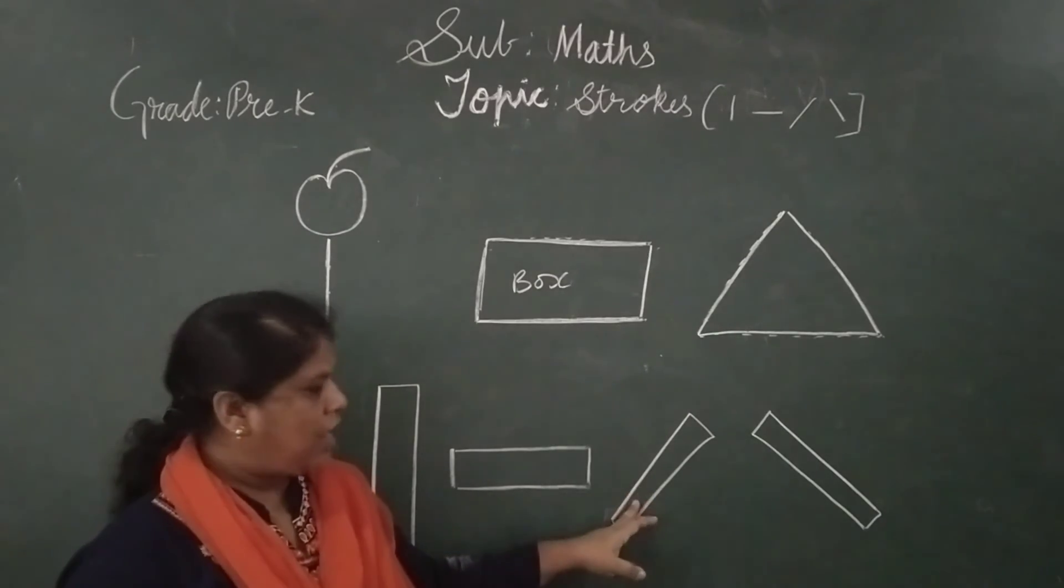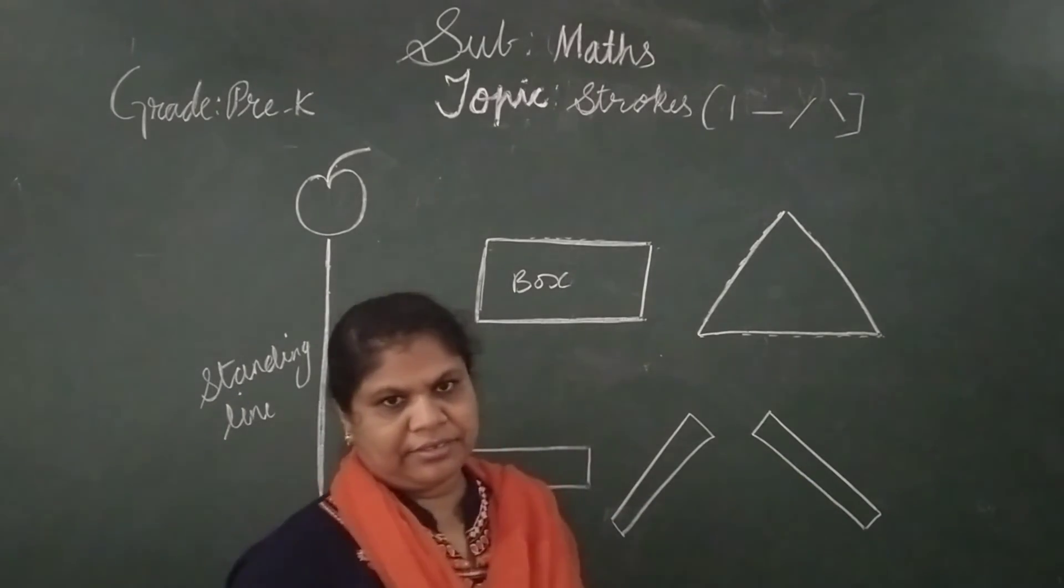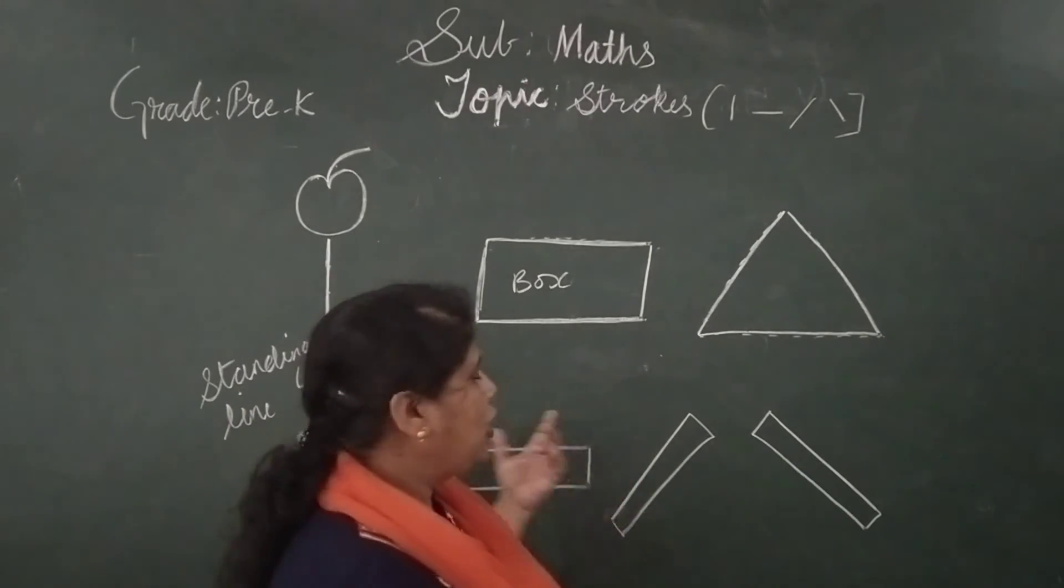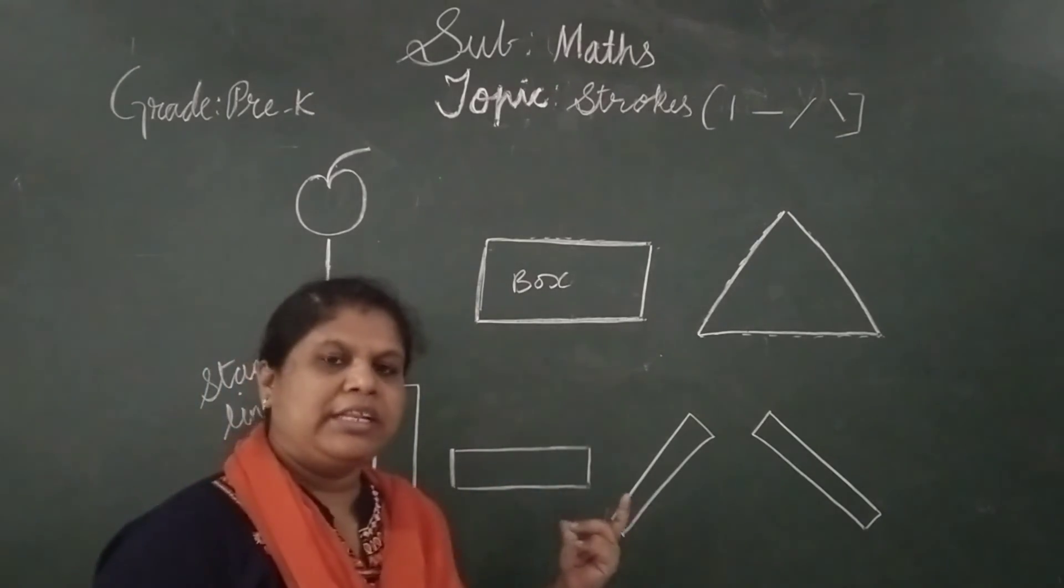This is a right slant line. And this is a left slant line. If you learn this basic strokes, then you can move on to the next numbers.